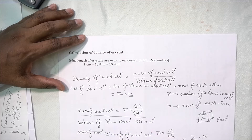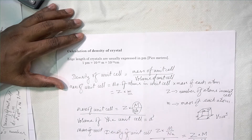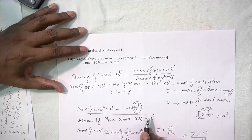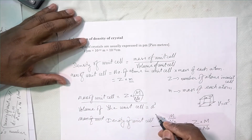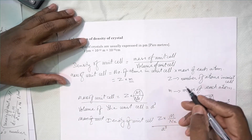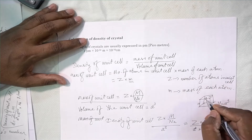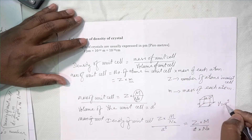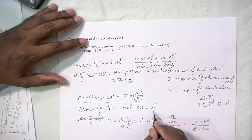We are finding mass of one atom here, so number of atoms into mass of one atom gives mass of unit cell. The volume of the unit cell, because it is cubic and each side is A, V is equal to A cubed. We substitute that as A cubed.